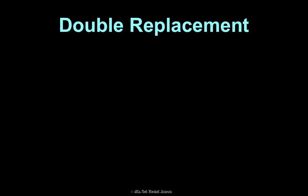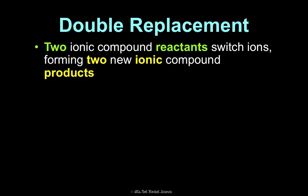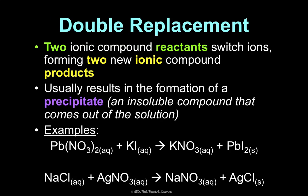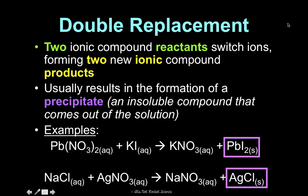Last but not least is double replacement. This is when two ionic compound reactants switch their ions, and we make two new ionic compound products. Usually, if you're watching this, you'll get a precipitate that forms. For example, lead nitrate and potassium iodide — that's two compounds making two new compounds. The precipitate would form in these solutions.